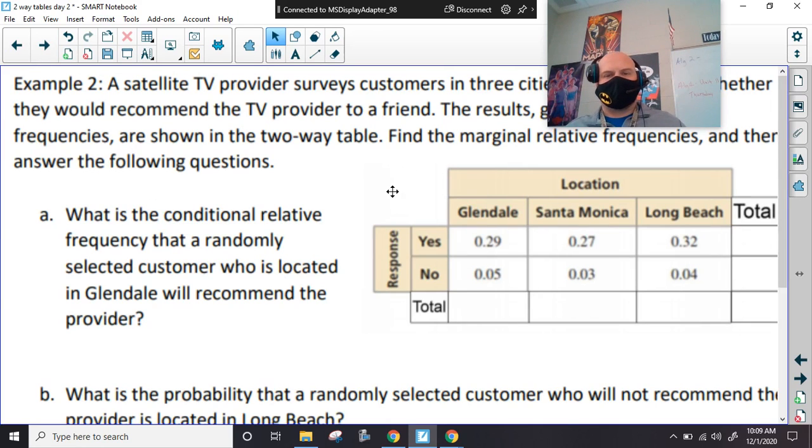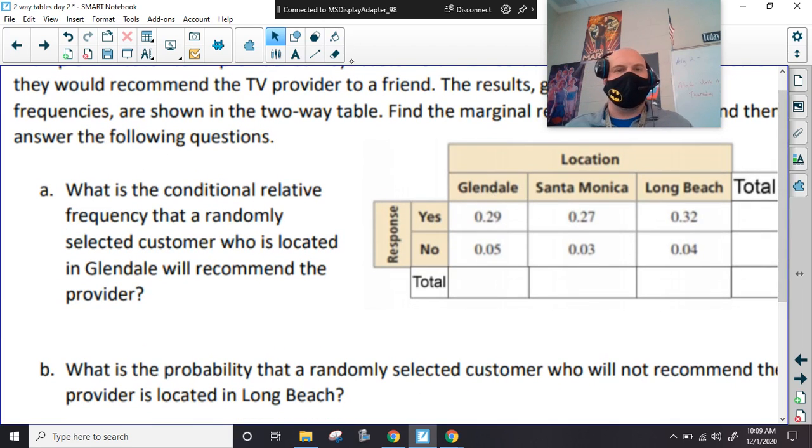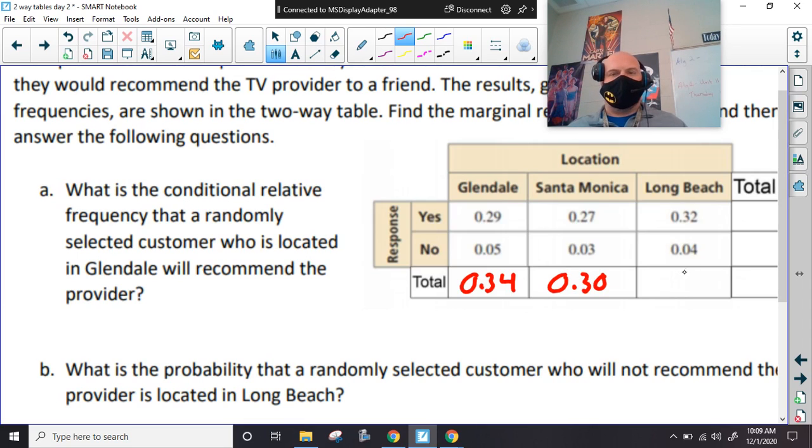All right. So, this one's kind of cool. This is already filled out for us. It's set for our totals. So, we just had to take our time and add this up. So, this is going to be 0.34, 0.30. This is kind of similar to what we had the other day with the Long Beach and Santa Monica stuff. 0.36. This should all add up to 1. And across the top, 0.12. So, this should be 0.88. All right. So, now we have everything we need to find this conditional relative frequency. All right. So, it says, if someone who's related, who's in Glendale. So, that's going to be this column right here. So, we're going to divide by 0.34. And that they recommended. So, that would be the yes. So, it's 0.29 divided by that.